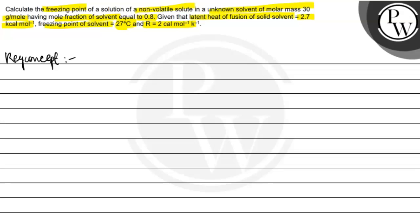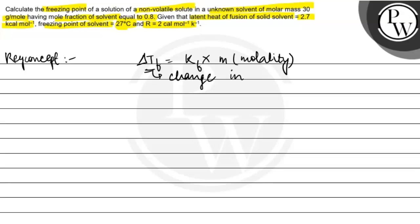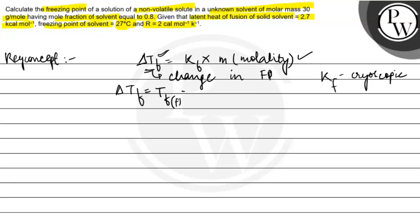Unme se first hai depression in freezing point, that is ΔTf ka formula, jo hota hai Kf into m (molality). Yahan ΔTf hai change in freezing point, ya depression in freezing point. Kf hai cryoscopy constant. Humein pehle yeh cryoscopy constant chahiye aur phir molality ki value, so that hum calculate kar sakenge change kitna hai. ΔTf = T_final minus T_initial — change kitna hua usse represent karte hain. Kf bhi hum direct find out nahi kar sakte, Kf ka bhi ek formula hai.